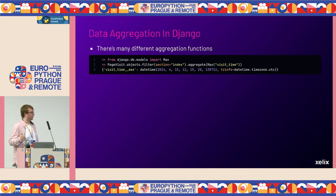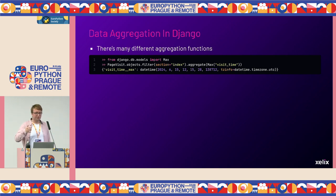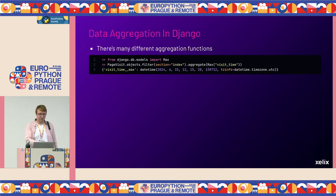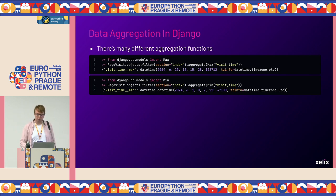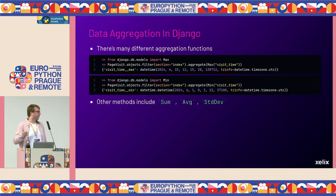There are many different aggregation functions built into Django. One is Max, which returns the maximum value of a specific column — for example, the maximum visit time to section index — returning a dictionary with an auto-generated key. You've got Min as well; both work on any comparable columns. There are other methods like Sum, Average, and Standard Deviation. Those wouldn't really make sense on times, but you could use them on integers. And you can define your own.